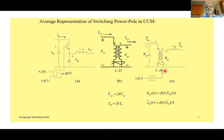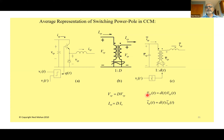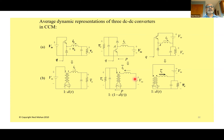In the dynamic sense, the duty ratio d may be a function of time, giving us an average representation using an ideal transformer with controllable turns ratio. This average model can be inserted into all three switching converters — buck, boost, and buck-boost — though you have to be careful for boost because the MOSFET is in the bottom and the diode is in the top. These representations are for continuous current conduction mode.